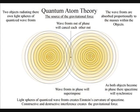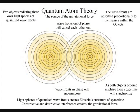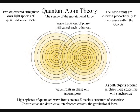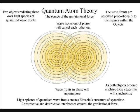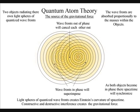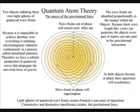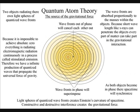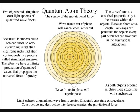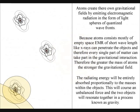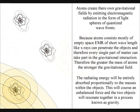When the wavefronts of two spheres come in contact, we will have destructive interference, and the wavefronts out of phase will cancel each other out. There will also be constructive interference between the wavefronts that are in phase, and they will superimpose. The radiant energy will be entirely absorbed proportionally to the masses within the objects. This will cause an unbalanced force, and the two objects will resonate together in a process known as gravity.